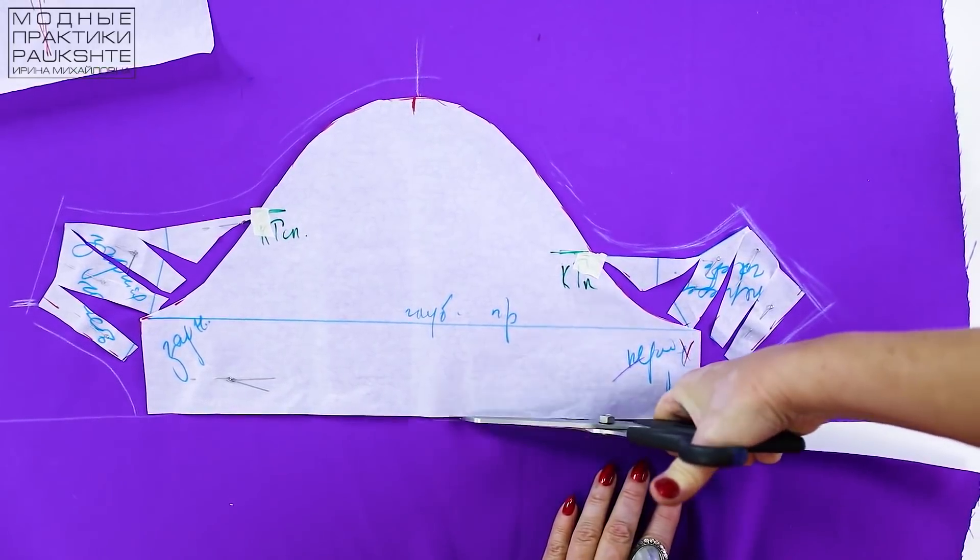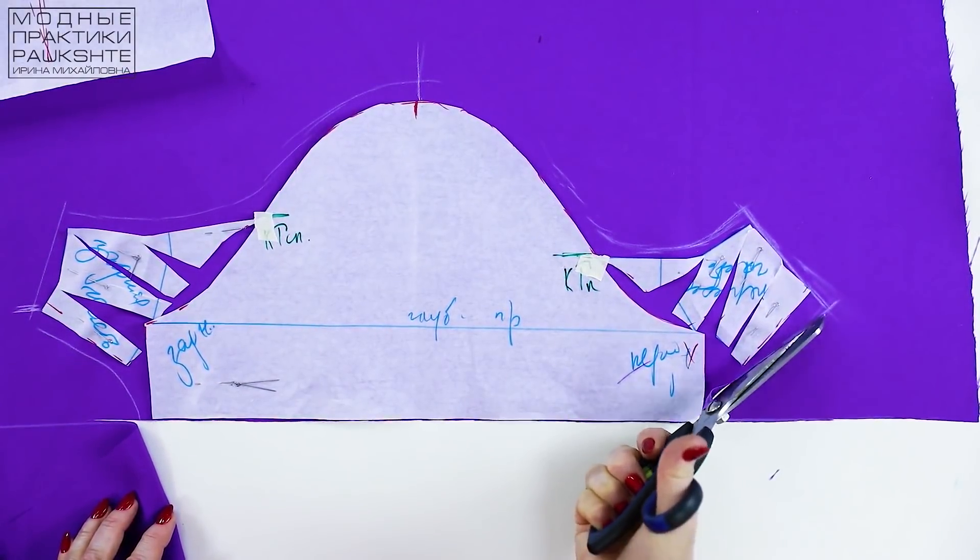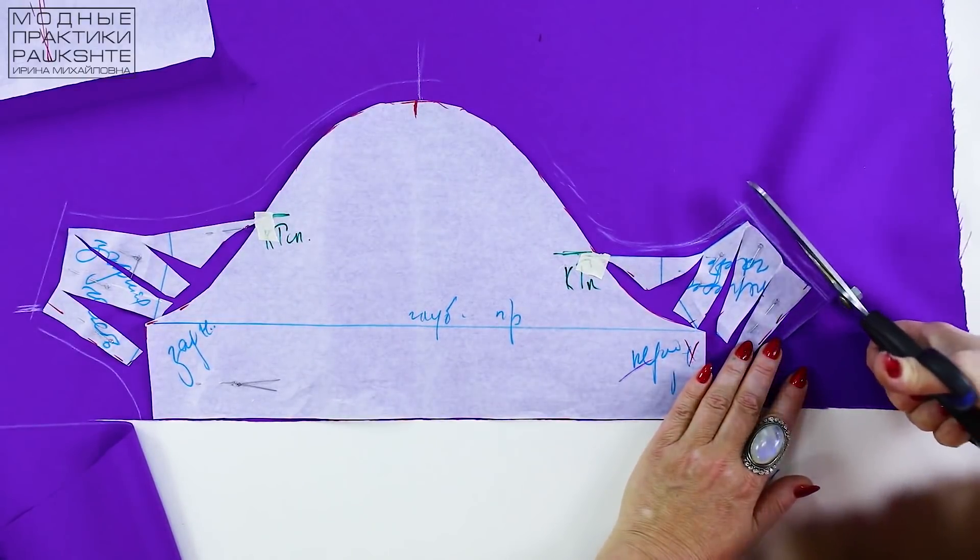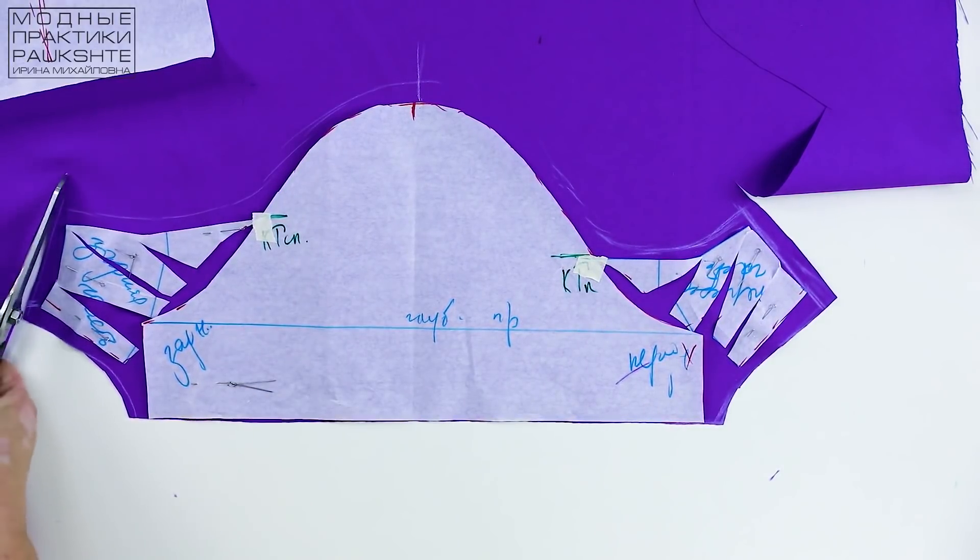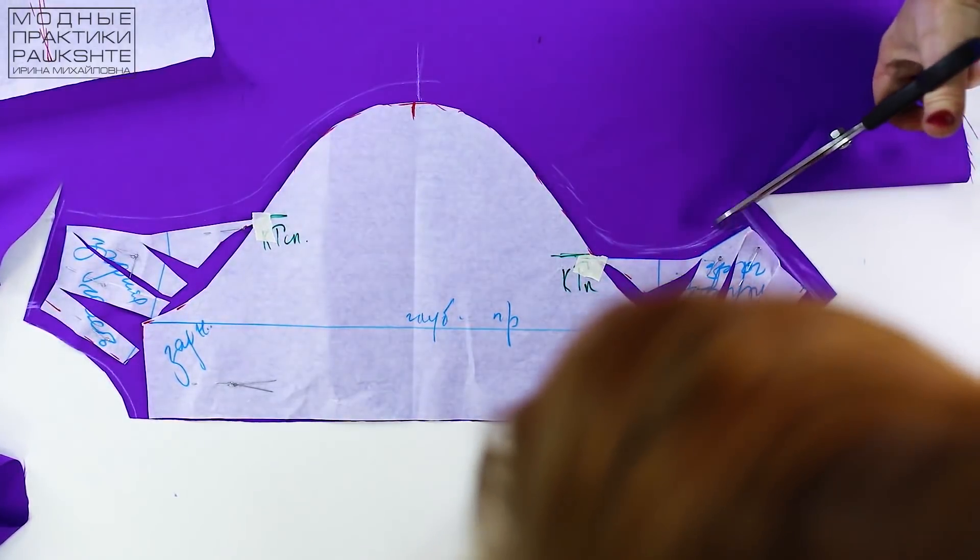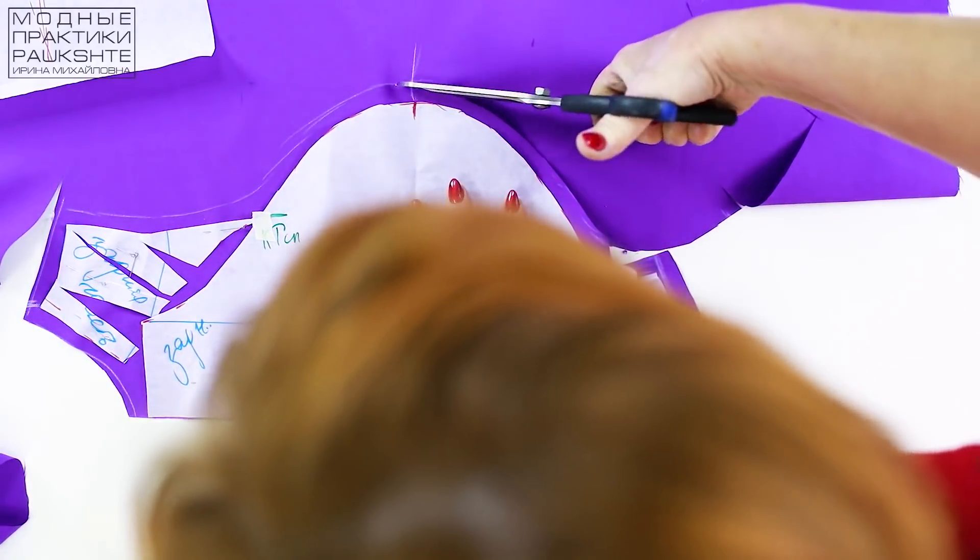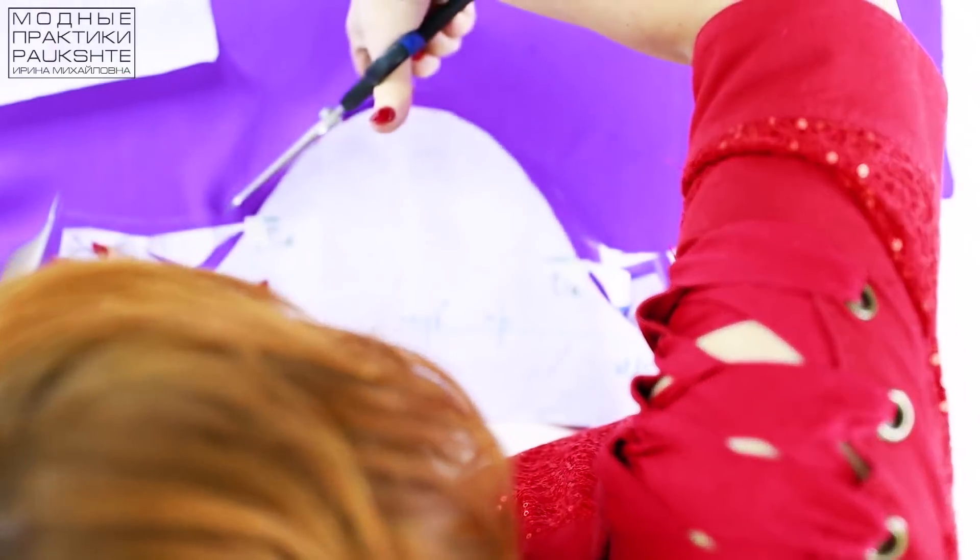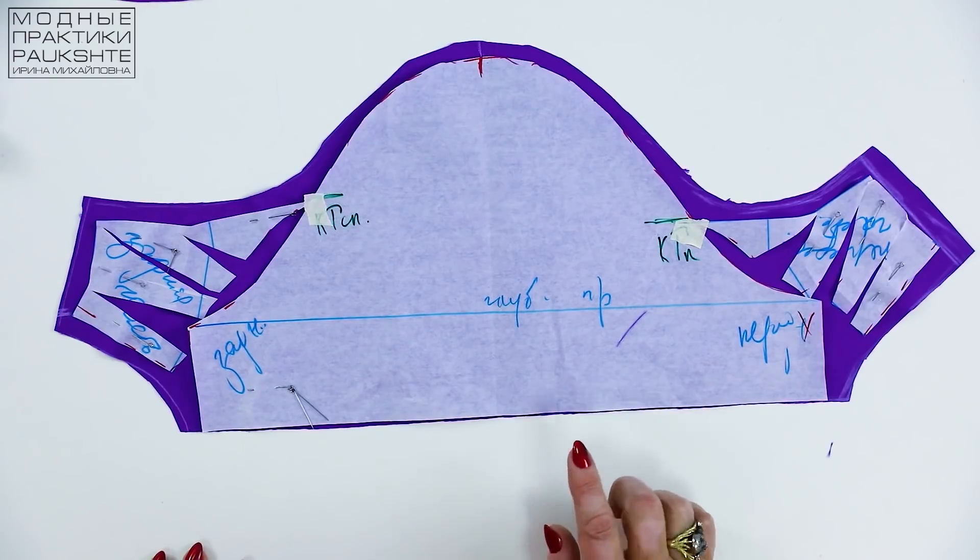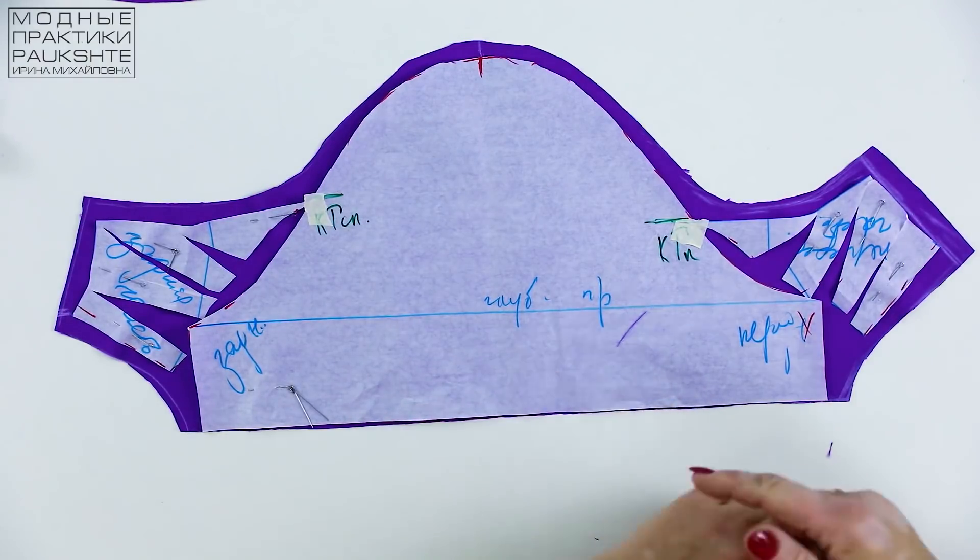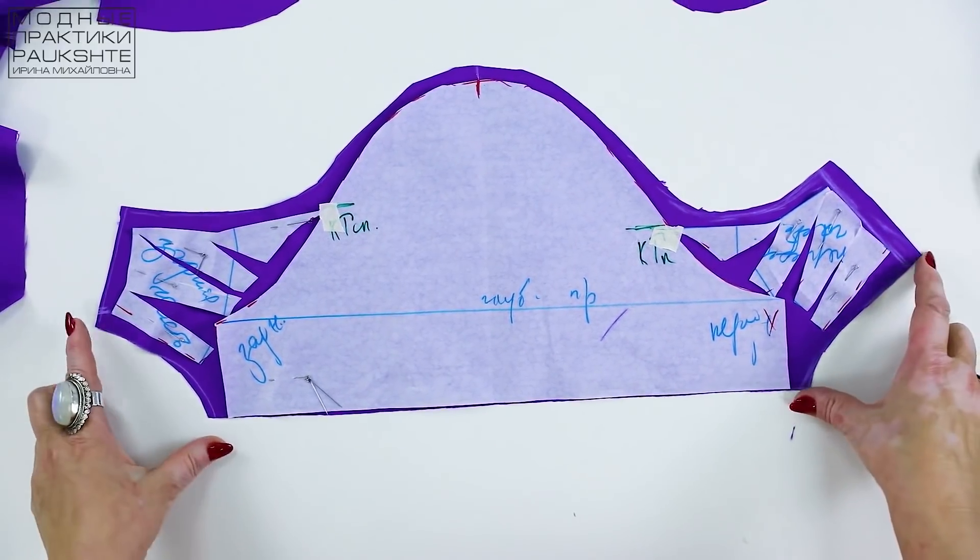I'll cut it out. If the sleeve was longer, these lines would be longer too. These are the lines which depend on the length. This is how the sleeve looks like now.